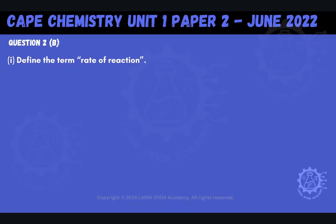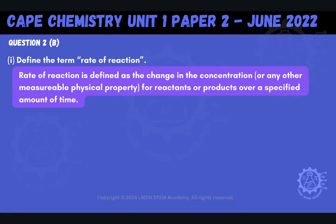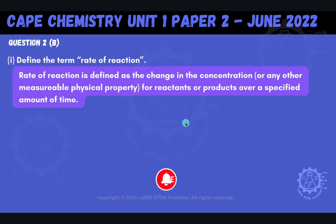So the first part, Part B, Part I, asks us to define the term rate of reaction. The rate of reaction is defined as the change in concentration, or any other measurable physical property, for reactants or products over a specified amount of time.